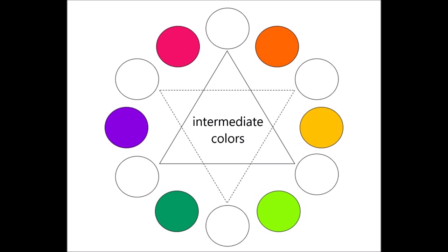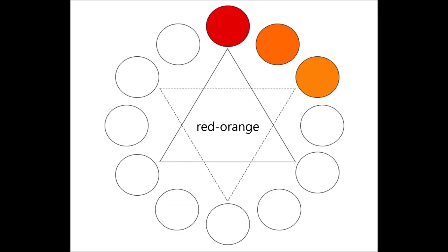Intermediate colors, also known as the tertiary colors, are achieved by mixing a primary and its adjacent secondary color. Mixing red and orange, for example, creates the intermediate red-orange.